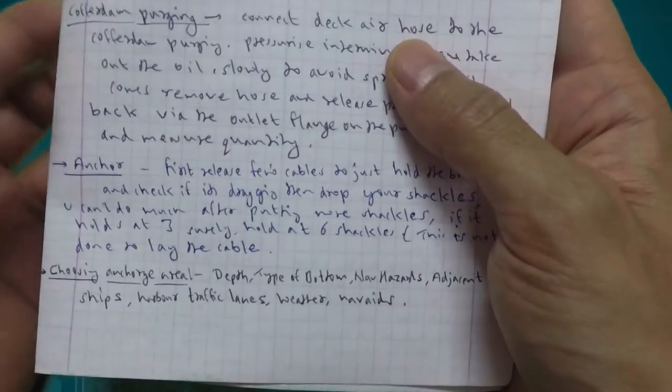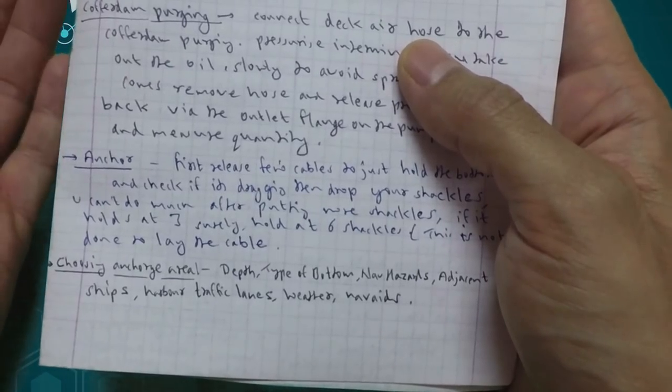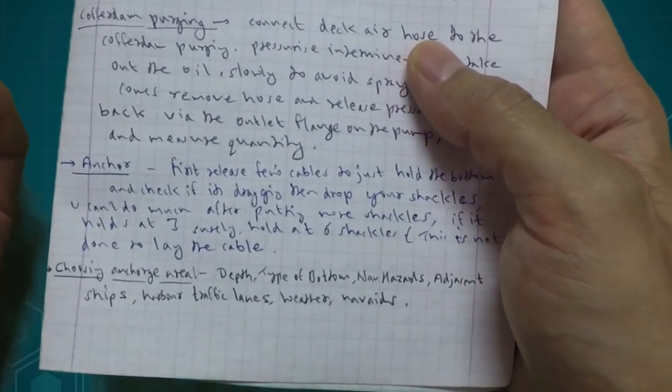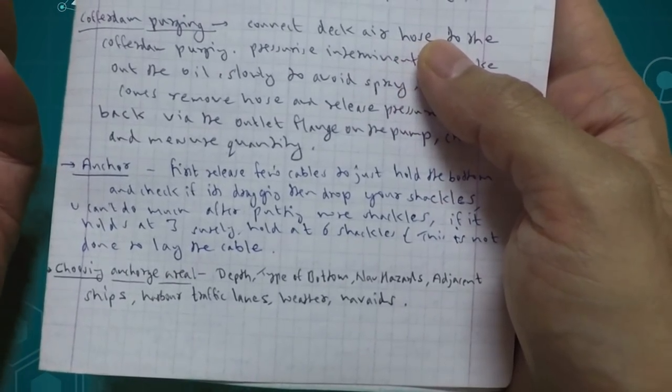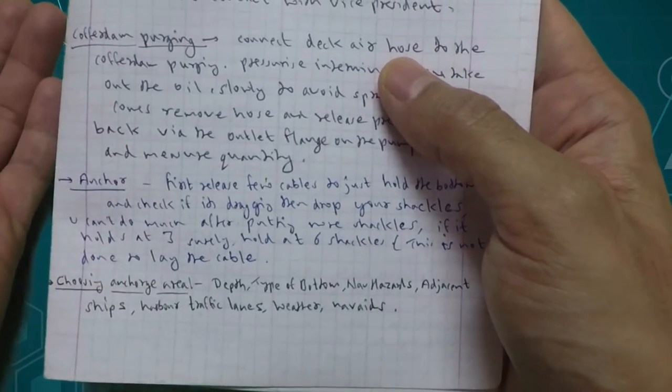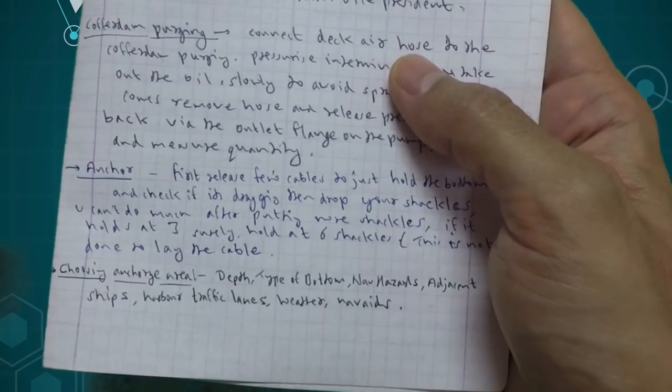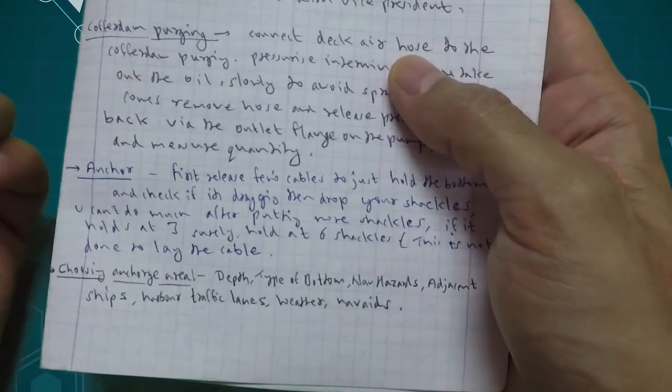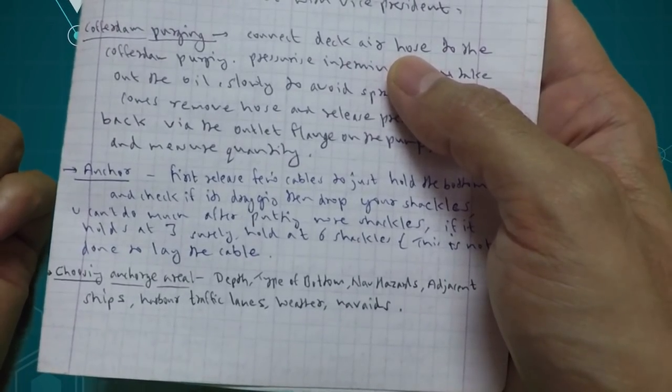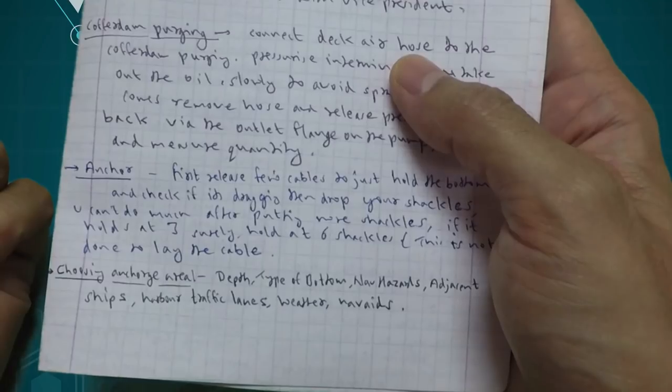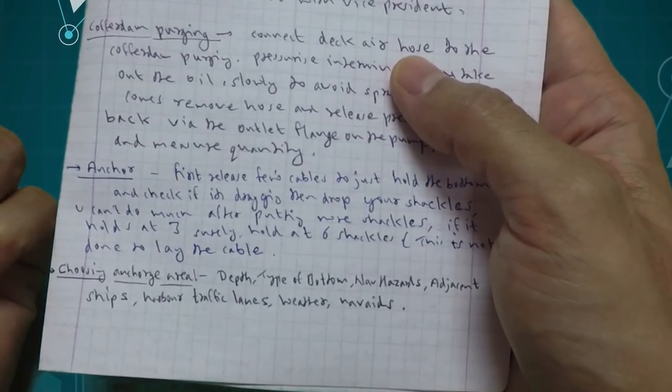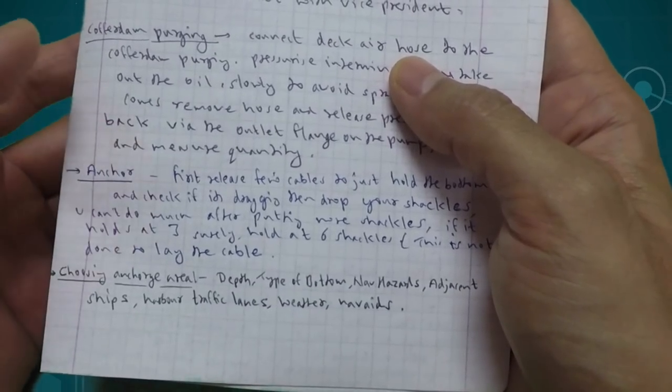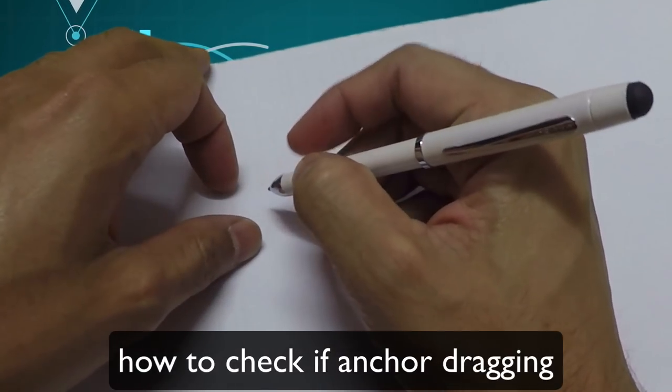If it is very deep anchorage, then 1 or 2 shackles already in the water chain, and then anchoring. So first release few cables to just hold the bottom, and as we go in anchorage we normally put 3-4 shackles depending upon depth. 1 shackle is 27.5 meters, so we put 4 shackles and see that the ship is holding or not. Once we know that the ship is holding and the tension comes, after that we release 6 shackles and 7 shackles.